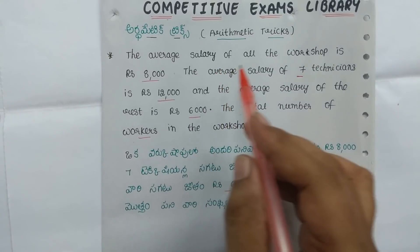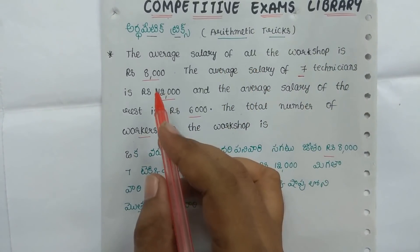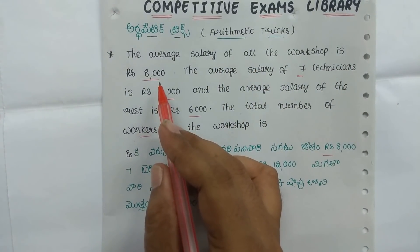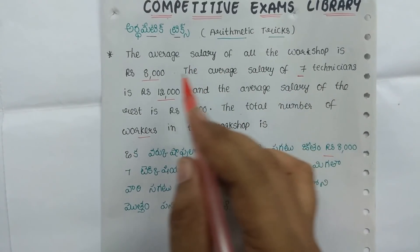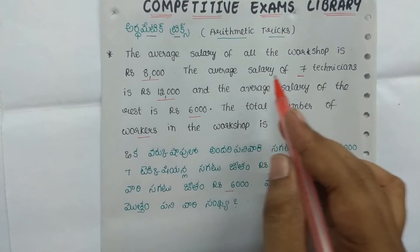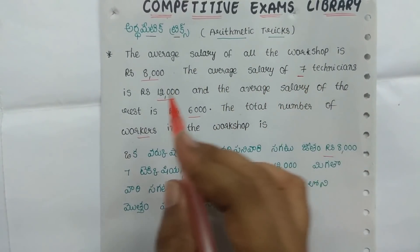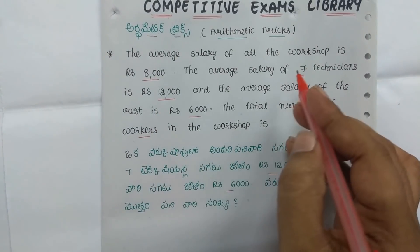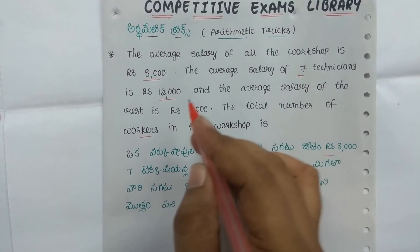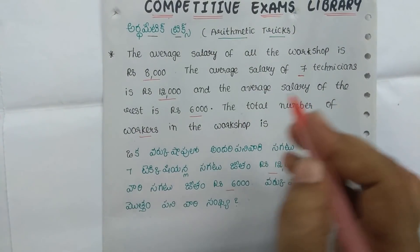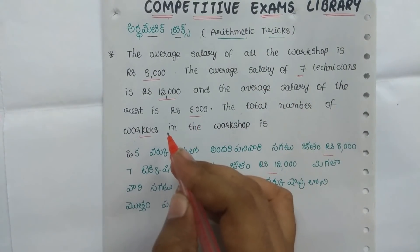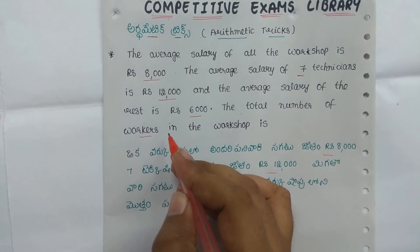The average salary of all the workers in the workshop is 8000. The average salary of 7 technicians is 12000. The average salary of the remaining workers is 600. So the total number of workers is to be found.